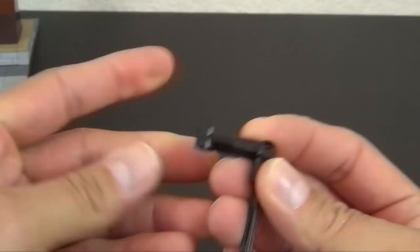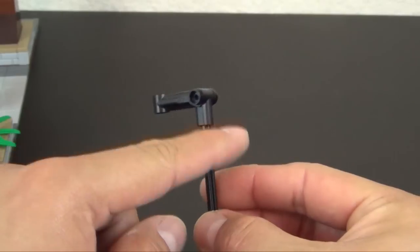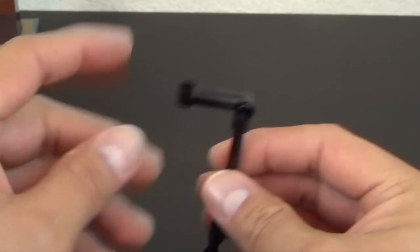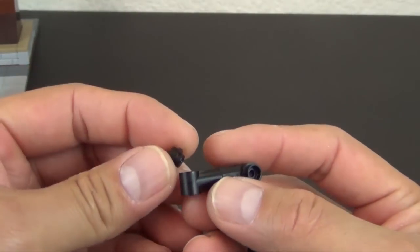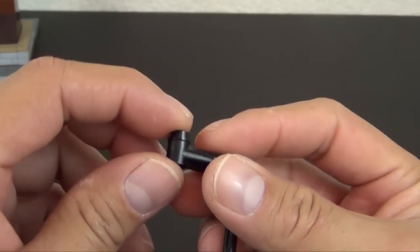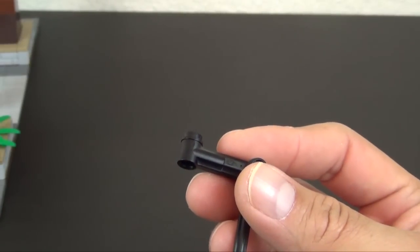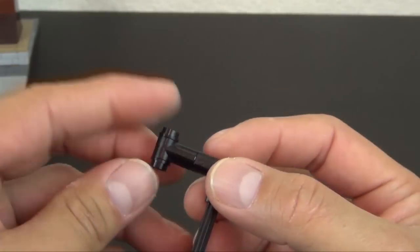Then we have this axle joiner with a pinhole on the end, so that just goes like this. There's the L-shape top of my street lamp. Similar to what we did here, I'm going to cap this off with a black stud.